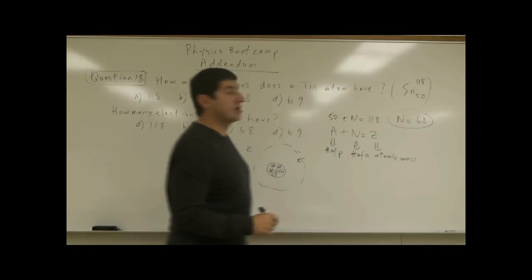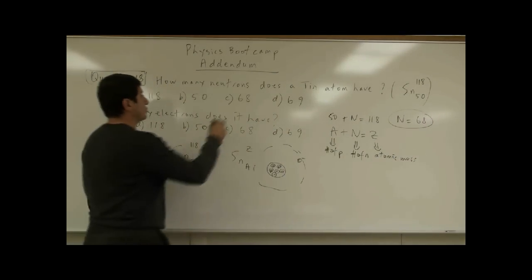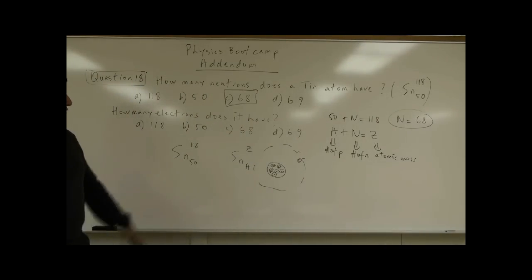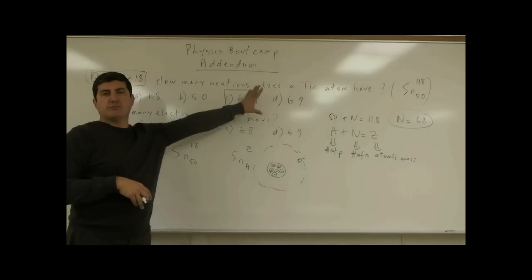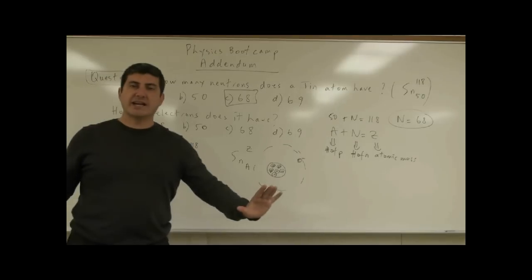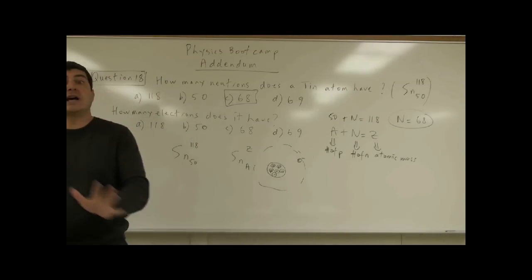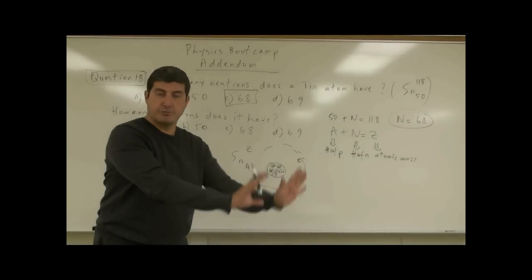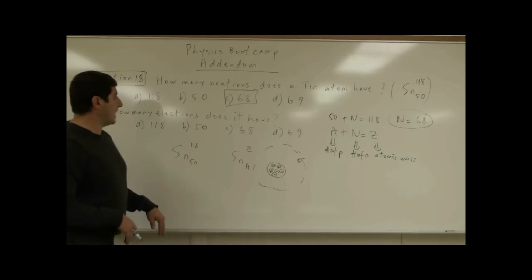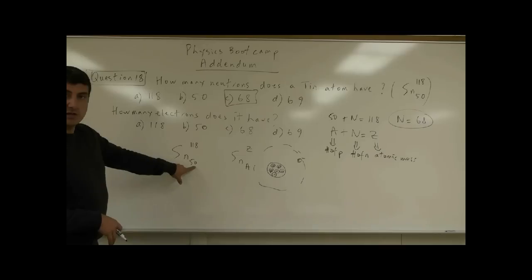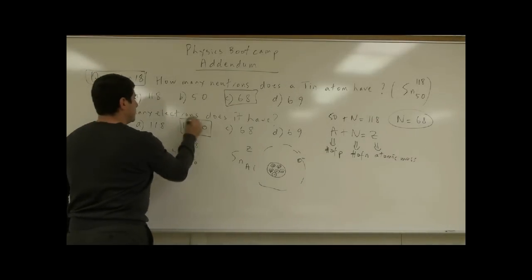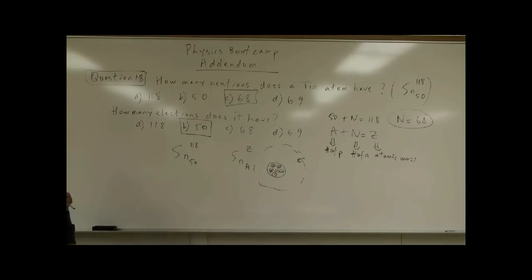So there are 68 neutrons — the answer is C. Now, how many electrons will it have? We are assuming the atom is not ionized — it's a neutral atom. A neutral atom has the same number of electrons as protons. It has 50 protons, so it must have 50 electrons. The answer is B.